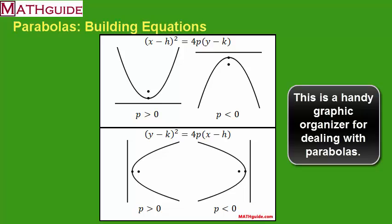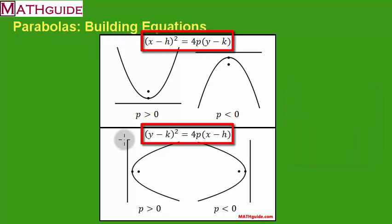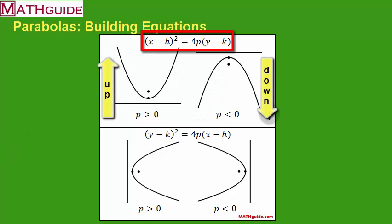In our last video we started with the equations and found out what the pictures look like based on those equations. Remember that when the x is being squared, the parabola is either open up or open down, and it depends on the p-value. If this coefficient is positive, we know it's open up. If it's negative, we know the parabola is open down.